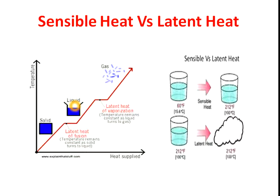After reaching 100 degrees Celsius, if you are still supplying heat to this water, its temperature will not rise above 100 degrees Celsius. So where is this heat going? This heat is now utilized for changing the phase from liquid to vapor. All the heat which is utilized for changing phase is known as latent heat.